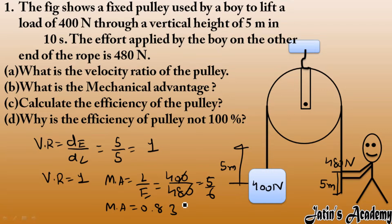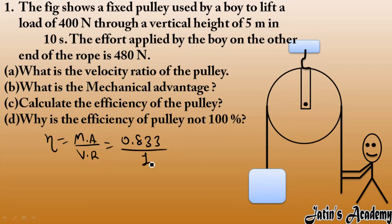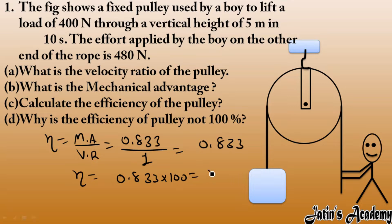Now we calculate efficiency. Efficiency equals mechanical advantage over velocity ratio. Mechanical advantage is 0.83 and velocity ratio is 1. So efficiency is 0.833. Multiplying by 100 gives 83.3 percent.